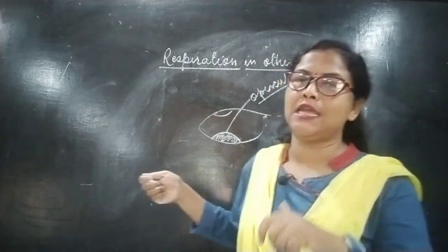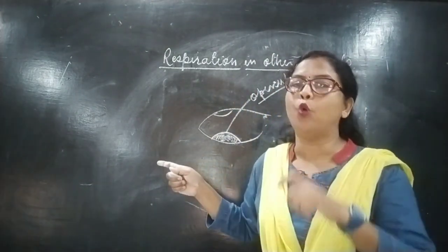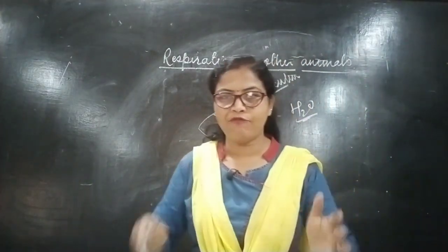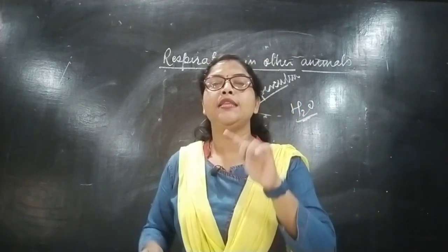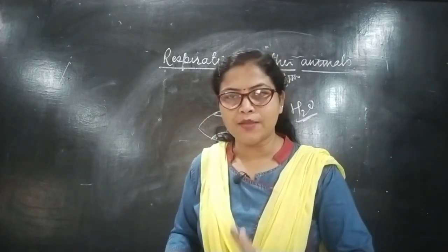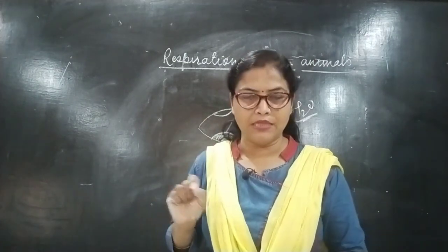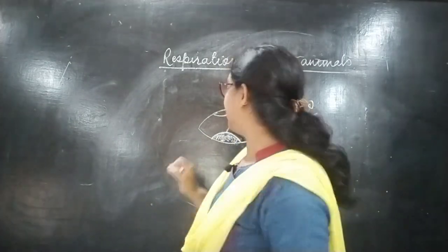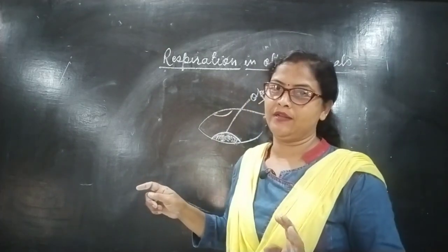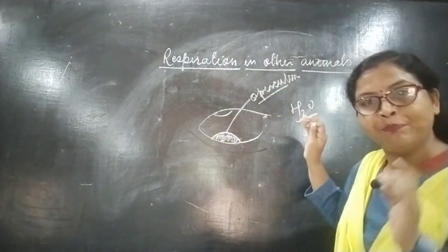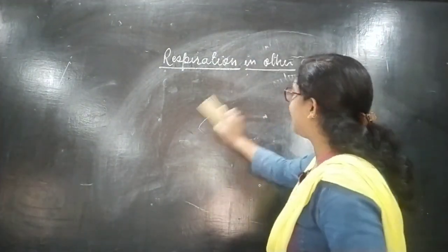So fishes take oxygen through their gills by absorbing it from the water. You must have noticed bubbles appearing on the water surface wherever fishes are present. This is because after absorbing oxygen, fishes release the water back, and this released water appears as bubbles on the surface.